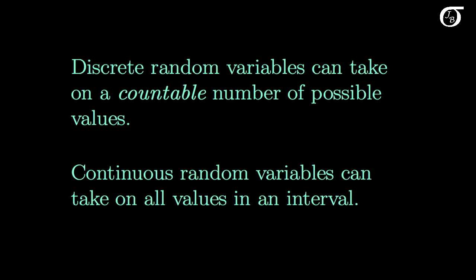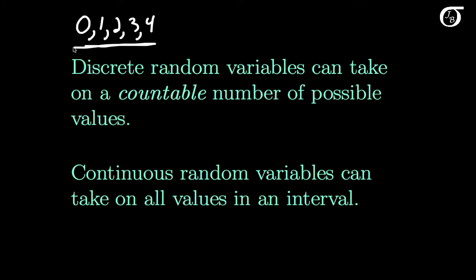Discrete random variables can take on a countable number of possible values. So if we think back to our die example, we had the possible values zero, one, two, three, and four — five possible values, so that's a countable number. Another way of thinking about this is that discrete random variables can take on a value from a set of distinct possible values like these.